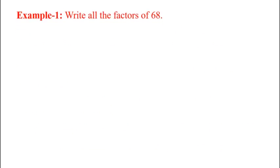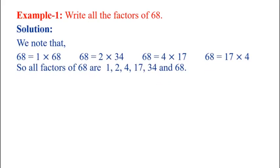Example 1: Write all the factors of 68. Solution: We note that 68 = 1×68, 68 = 2×34, 68 = 4×17, and 68 = 17×4. So, all factors of 68 are 1, 2, 4, 17, 34 and 68.